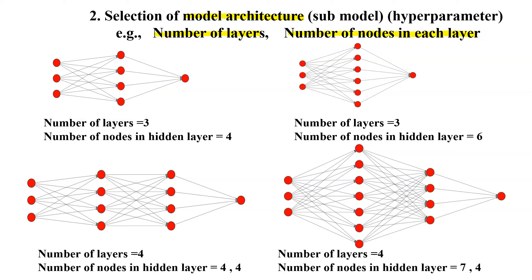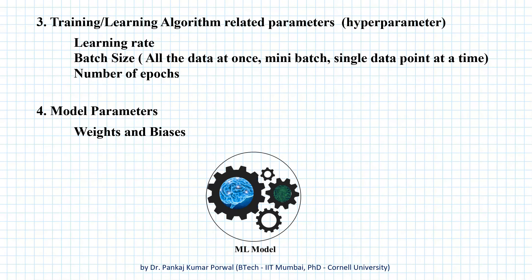some sample neural network architectures that have three input nodes and one output node, and they have different number of layers or different number of nodes in the hidden layers. Now once we finalize our model type and the model architecture,